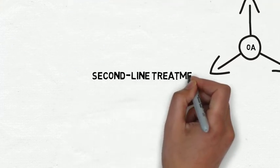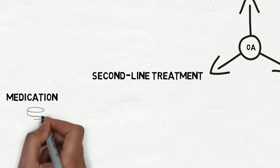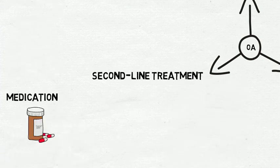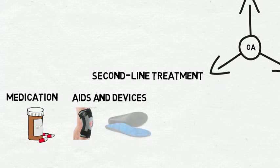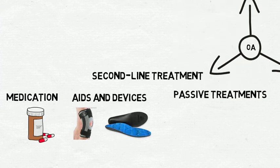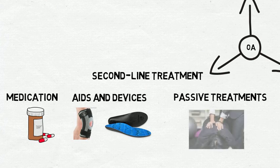Now, some individuals with osteoarthritis should receive second-line treatments, which include medication, aids and devices, like braces, joint supports, insoles, or assistive devices. And it also includes passive treatments given by a healthcare professional, like manipulation and stretching.